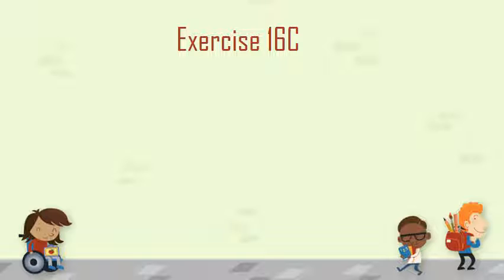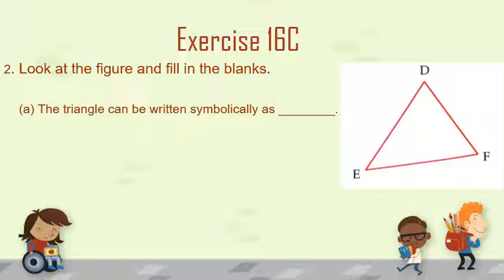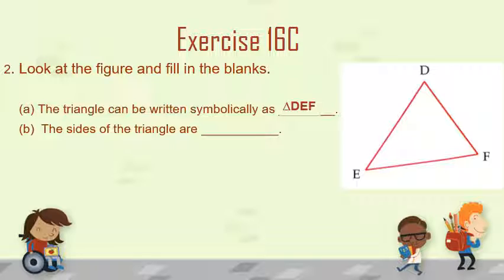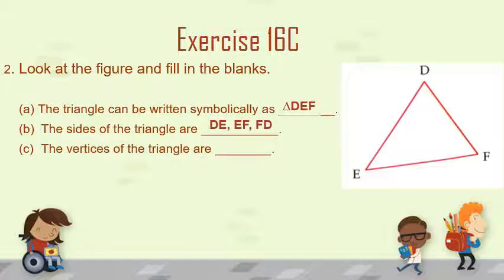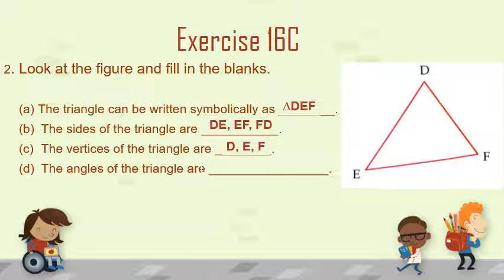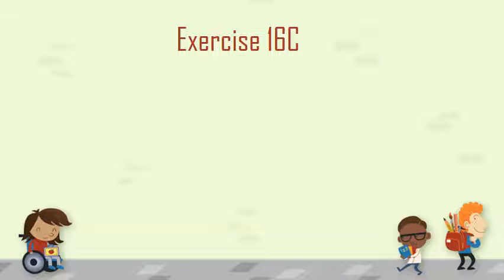Now let's come to exercise 16C and do some questions as revision. Question number 2: look at the figure and fill in the blanks. In the figure you can see triangle DEF. The triangle can be symbolically written as triangle DEF. The sides of the triangle are DE, EF, and FD. The vertices of the triangle are D, E, and F. The angles of the triangle are angle DEF, angle EFD, and angle FDE.